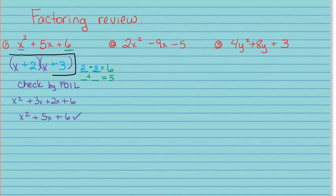For the second trinomial it's a little different. We're going to use a method termed 'bottoms up,' also known as the new AC method. The first thing I'm going to do is take a and multiply it by c — take the 2 and multiply it by 5 — and this is going to change my problem to x squared minus 9x minus 10.